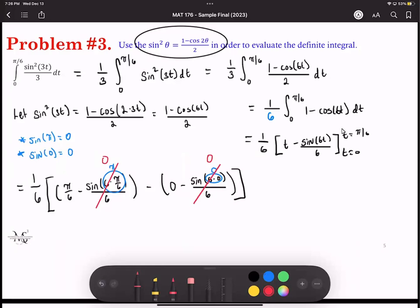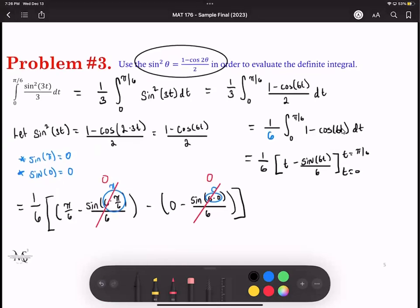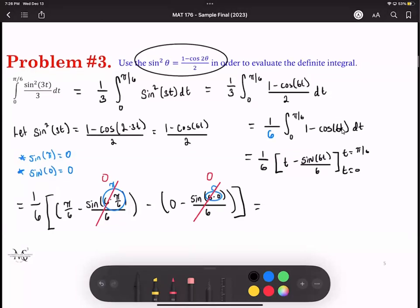So if you think about it, we just have one over six on the outside being multiplied by pi over six minus zero minus zero. So this is now going to just be one over six times pi over six, which will give us pi over 36 as my final answer.